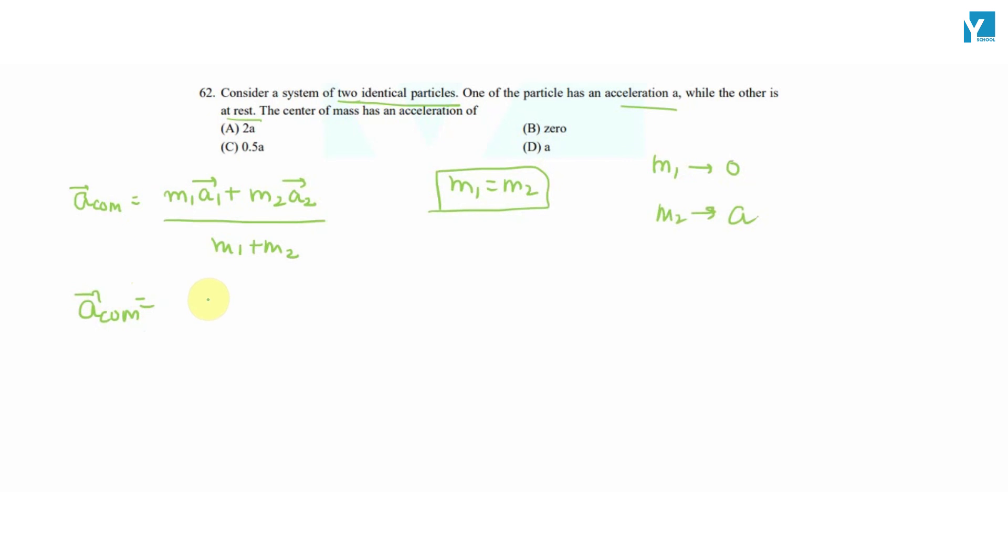So this will be equal to m1's acceleration a1 is 0. So this will be 0 plus m times a divided by m.